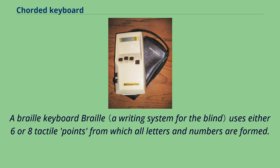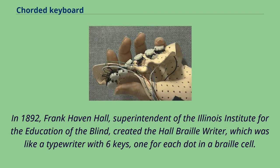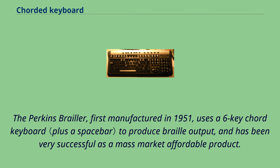Braille uses either six or eight tactile points from which all letters and numbers are formed. When Louis Braille invented it, it was produced with a needle holing successively all needed points in a cardboard sheet. In 1892, Frank Haven Hall, superintendent of the Illinois Institute for the Education of the Blind, created the Hall Braille Writer, which was like a typewriter with six keys — one for each dot in a Braille cell. The Perkins Brailler, first manufactured in 1951, uses a six-key chord keyboard to produce Braille output and has been very successful as a mass-market affordable product.